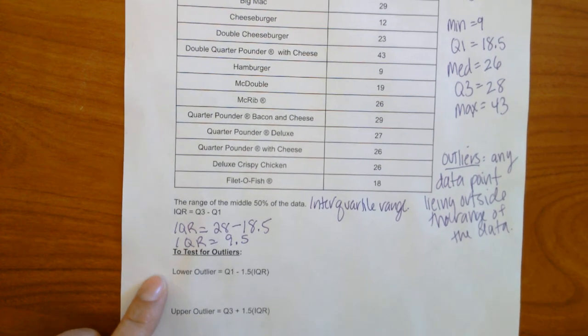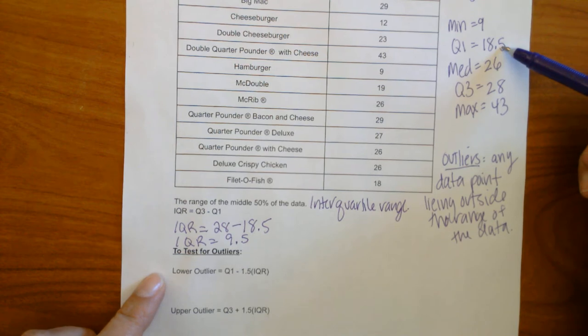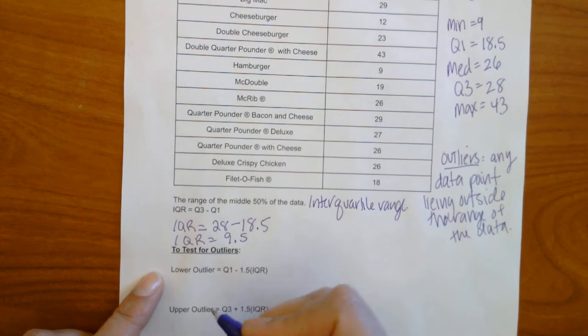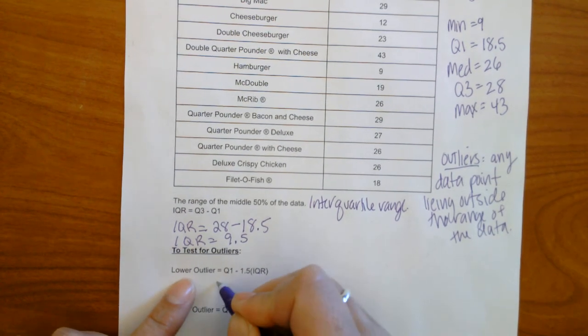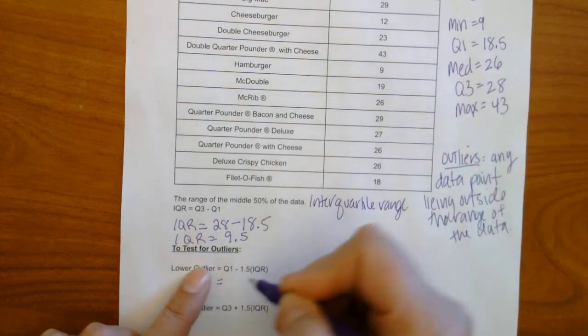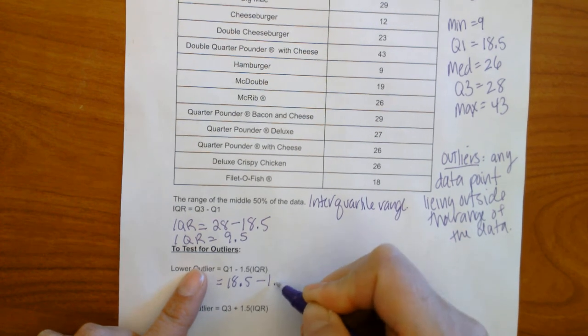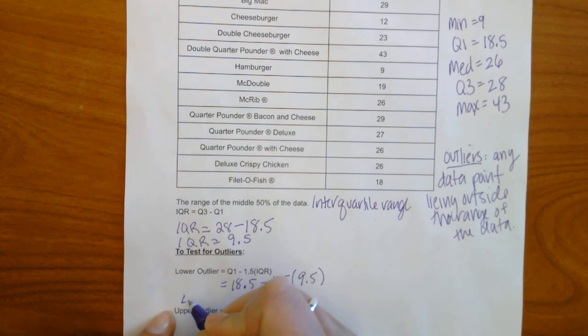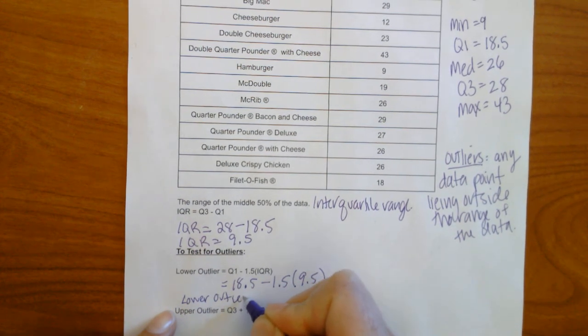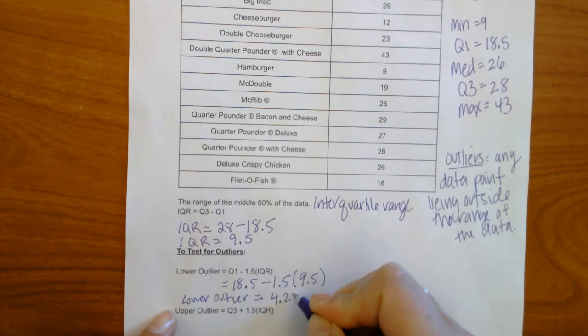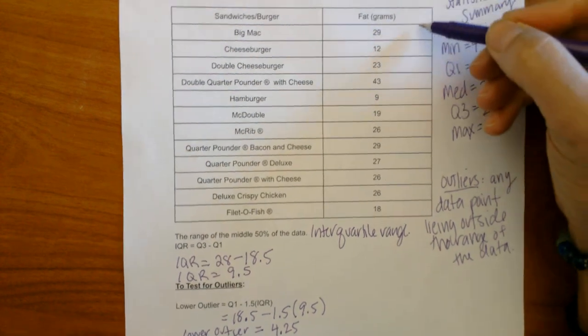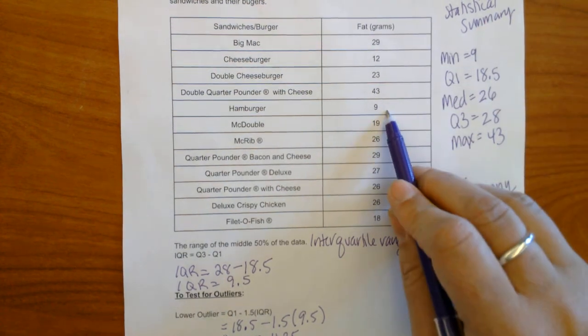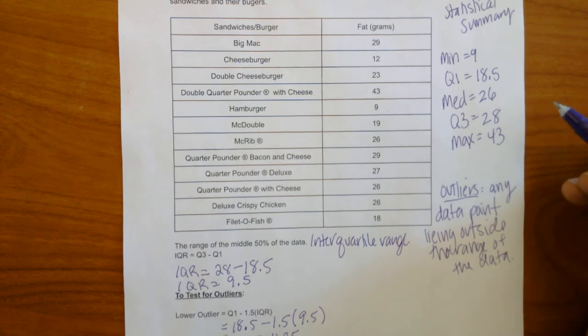Okay, so to test for outliers we first have to test our lower quartile. So are there any numbers that are going to be lying outside of this minimum? So let's test it. So our lower outlier equals quartile one, 18.5, minus 1.5 times our IQR of 9.5. So our lower outlier equals 4.25. And so what we have to look for in the data here are there any numbers that are lying outside of 4.25. And I don't think there are. The lowest one was 9. So we don't have any lower outliers.